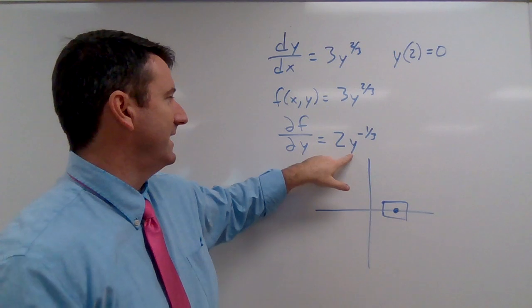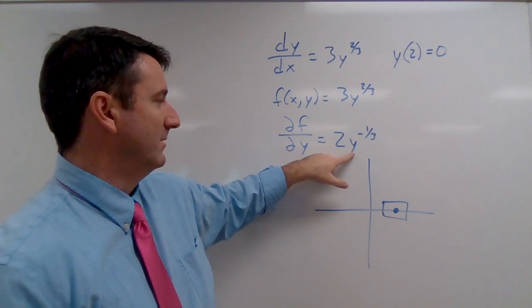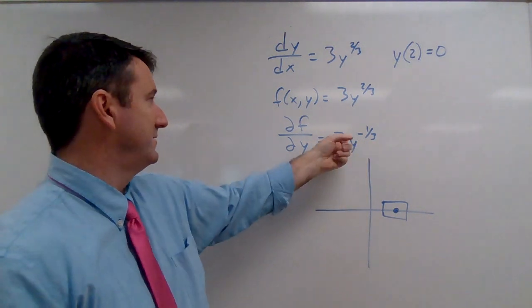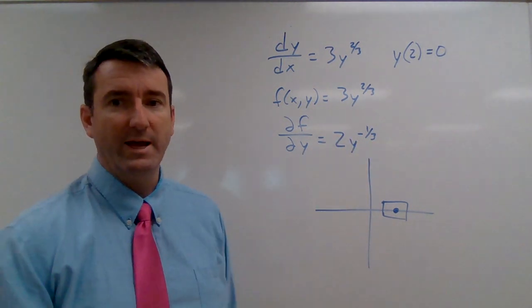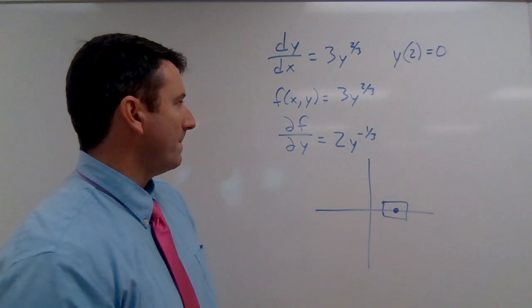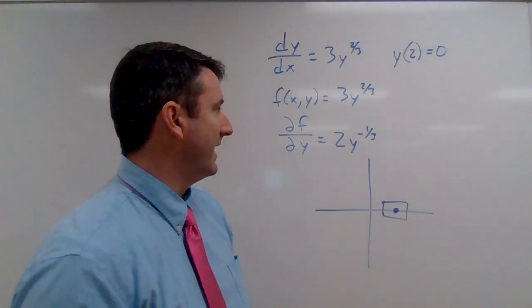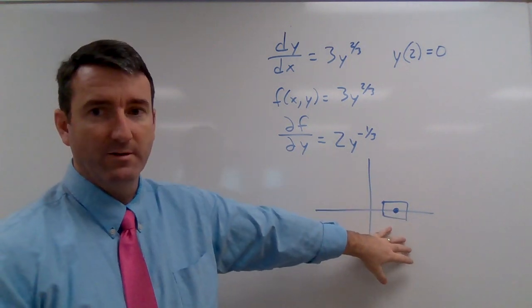Well, here we can see that if y is zero, this is not going to exist. Because this is two over the cube root of y. If y is zero, then we've got a problem here. We're dividing by y. So it's not going to be continuous at y equals zero.